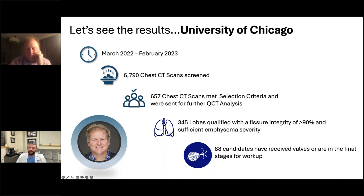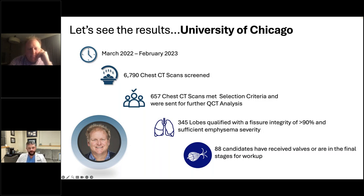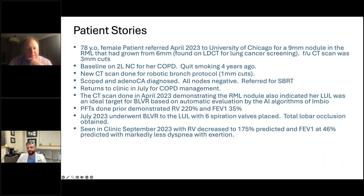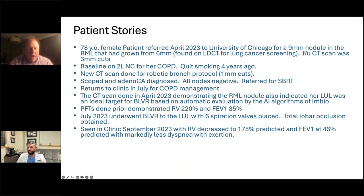There are probably folks on the call who are almost ready to bite the bullet and really start a program. Patient stories and anecdotes are really helpful for that. Here's a great one: a lady was referred in April for a 9mm nodule in the right middle lobe — follow-up from an LDCT where it had been 6mm. She was on 2 liters nasal cannula. She quit smoking four years ago. We got a new CT to map for a robotic bronc to biopsy, and it turned out to be adenocarcinoma.